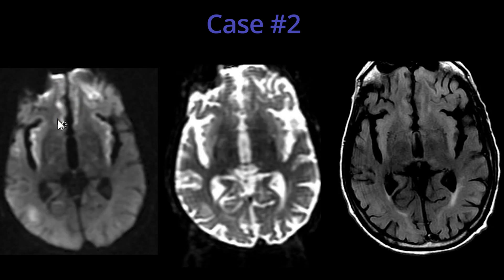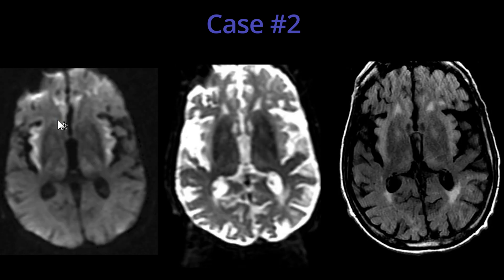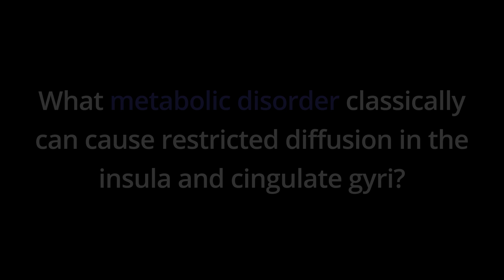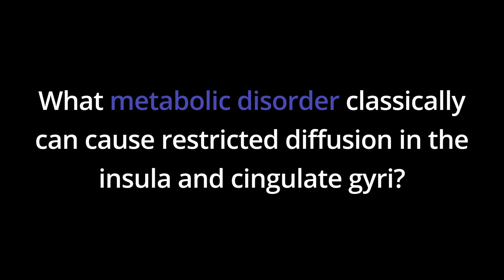The question, which is listed below, is: what metabolic disorder classically can cause restricted diffusion and abnormal T2/FLAIR hyperintensity involving the insula and cingulate gyri?